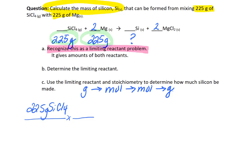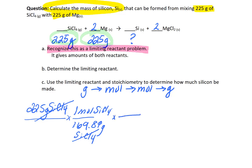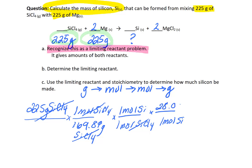The molar mass of SiCl₄ comes out to 169.89 grams per mole. So our grams cancel. Then from our balanced chemical equation we apply the mole-to-mole ratio: one mole of SiCl₄ produces one mole of silicon. Now that we're in moles of silicon, we convert to grams using silicon's molar mass: one mole of Si has a mass of 28.09 grams.